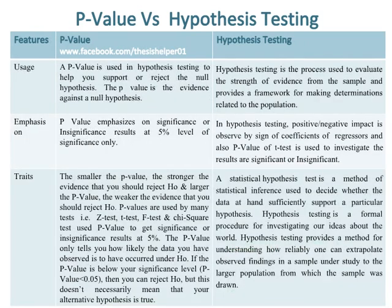A p-value is used in hypothesis testing to help you support or reject the null hypothesis. The p-value is the evidence against a null hypothesis. Whereas hypothesis testing is the process used to evaluate the strength of evidence from the sample and provides a framework for making determinations related to the population.